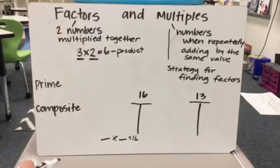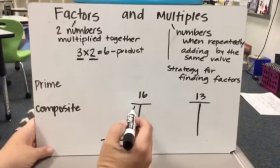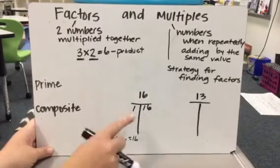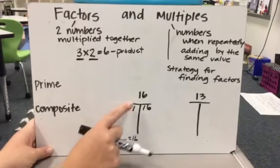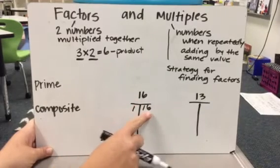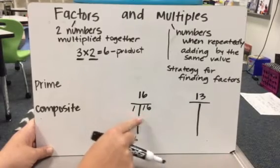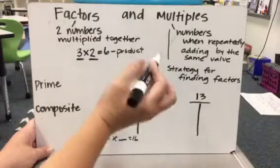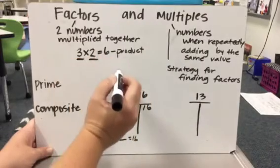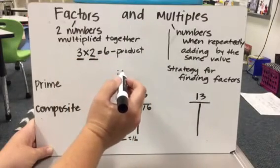you can automatically know that you can make one group of 16. So 1 is a factor that makes 16 and 16 is a factor. And then I also know that I could do 16 groups of 1 because one aspect of multiplication is the commutative property.